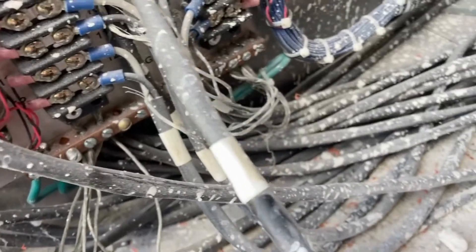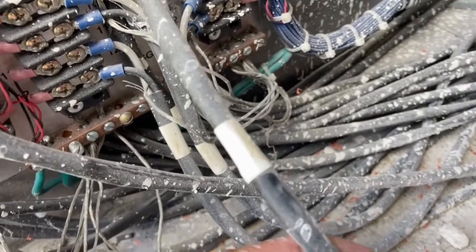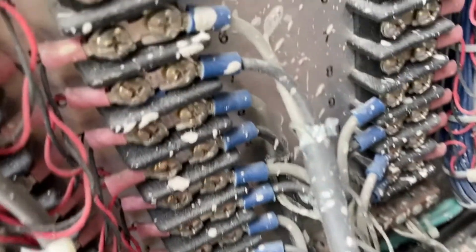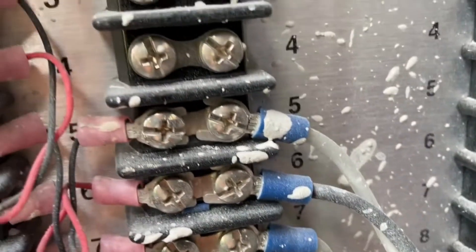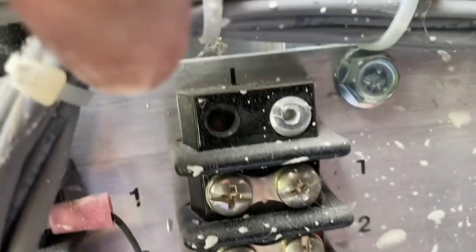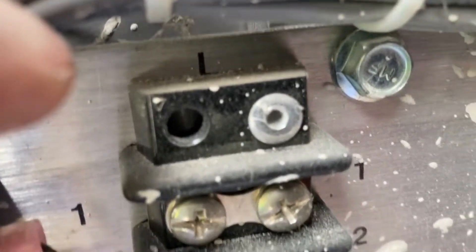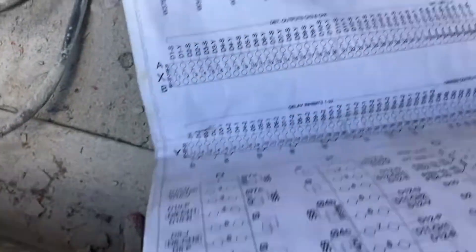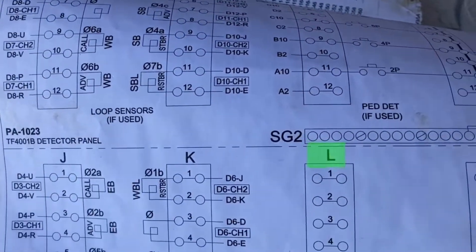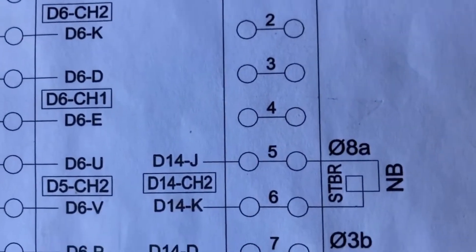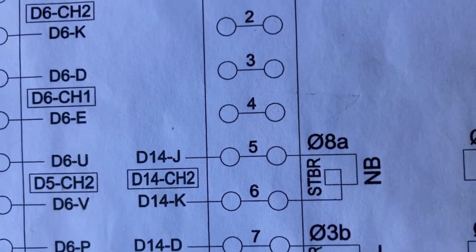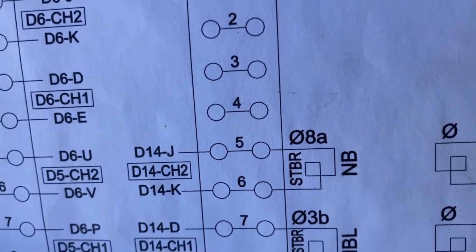Now I've got a loop here that's coming in and it's unlabeled. It's going up to terminal 5 and 6 of the panel — it's L, so L5 and L6. Coming over to my print: L5 and L6 — that is phase 8 northbound, at the stop bar.